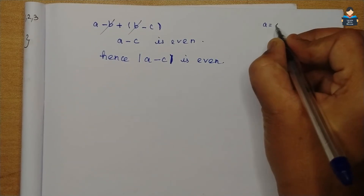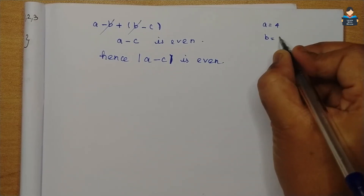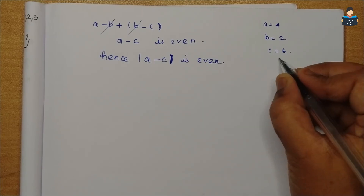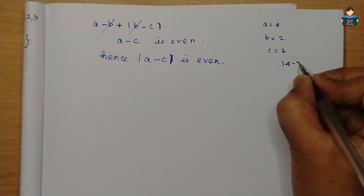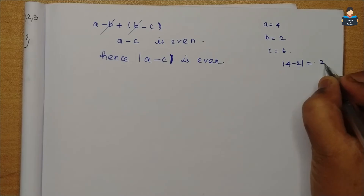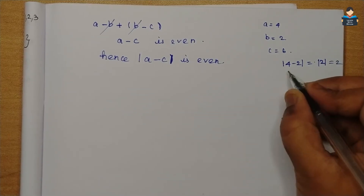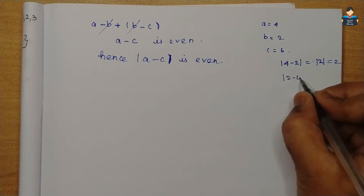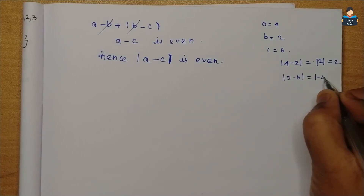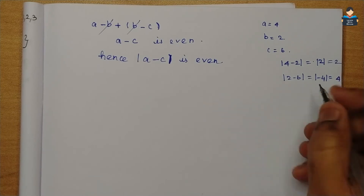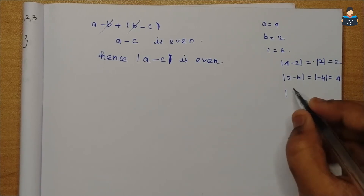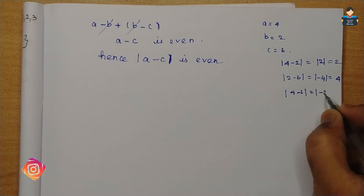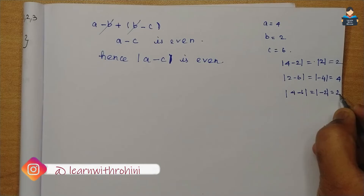For example, let A = 4, B = 2, and C = 6. Modulus of A minus B = |4 - 2| = |2| = 2, which is even. Modulus of B minus C = |2 - 6| = |-4| = 4, which is even. And modulus of A minus C = |4 - 6| = |-2| = 2, which is also even.